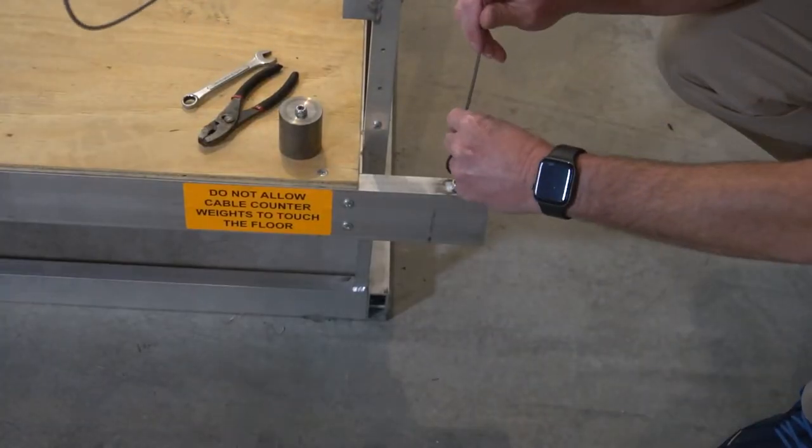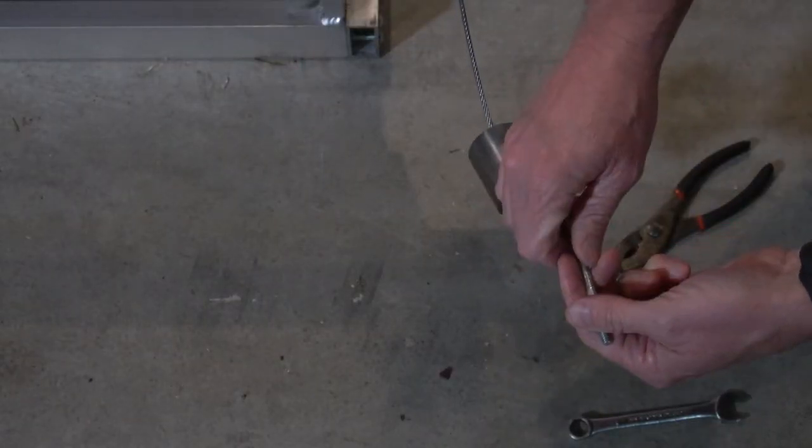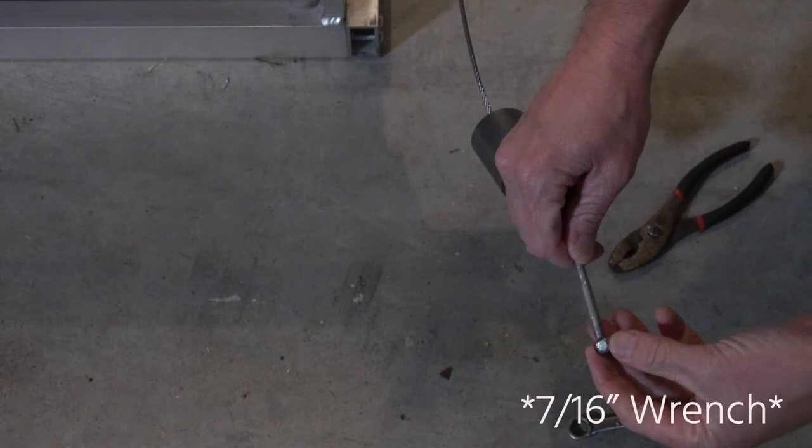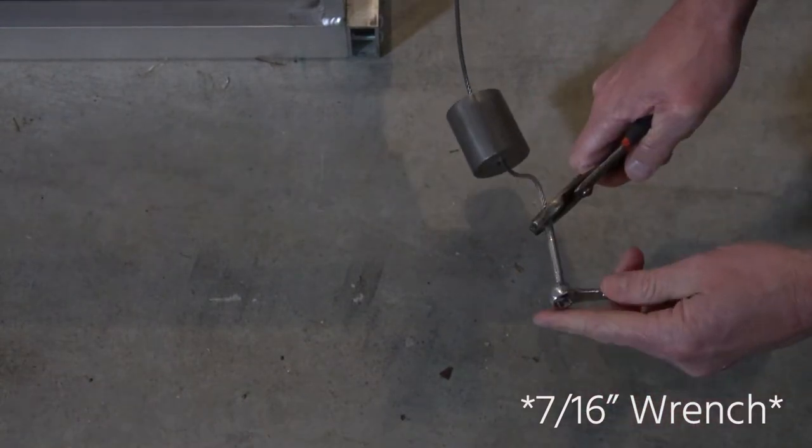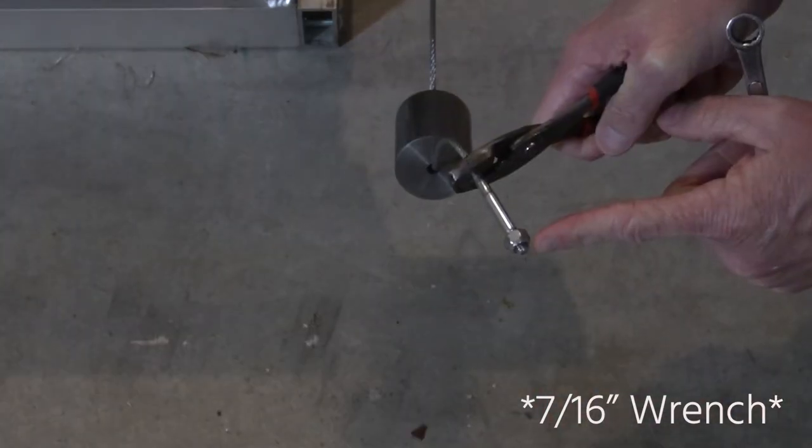Slide the ends of the cables through the holes and weights. Fasten with the nylon insert lock nuts. Do not over thread. There should only be two threads showing below the lock nuts.